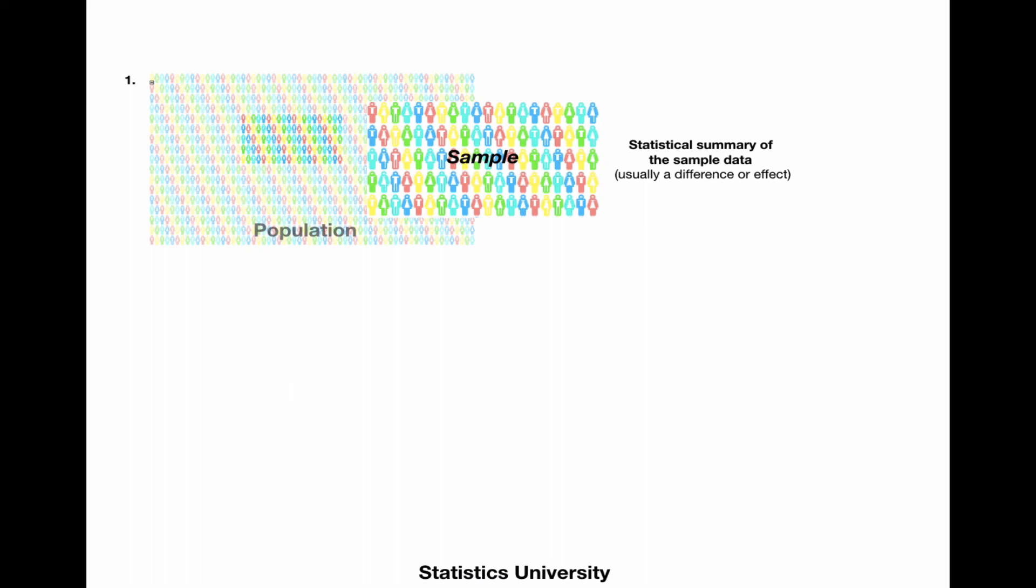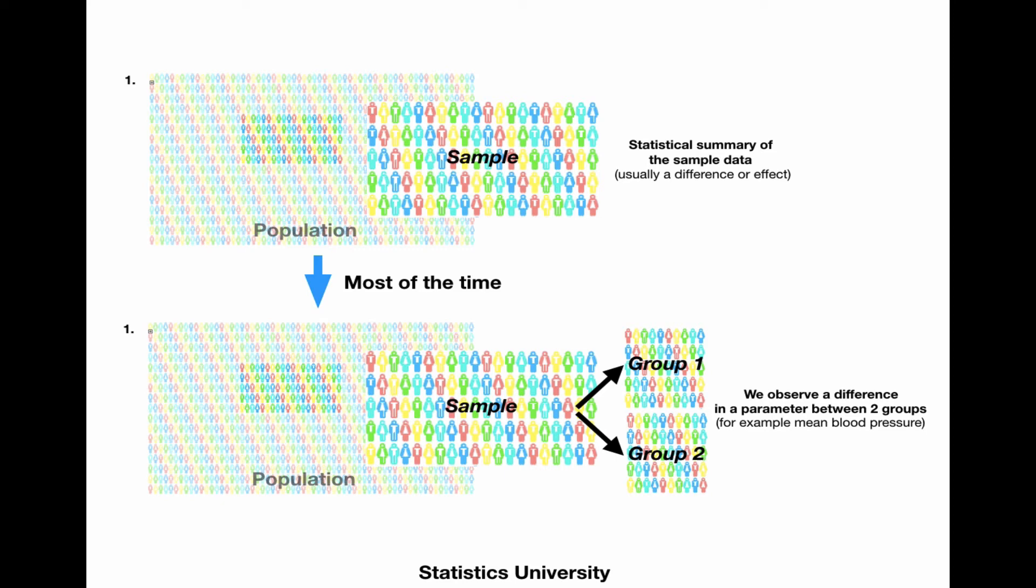Okay, so we've taken a random sample, and we compared it to the population, and we've already said that most of the time we are going to compare two groups in that sample, and we want to know whether they derive from the same population.